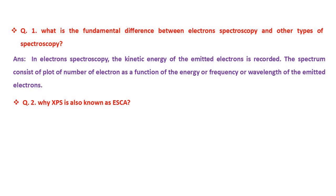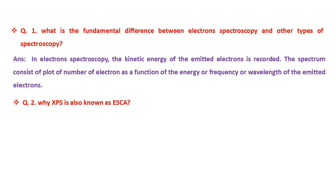Second question: why XPS is also known as ESCA? XPS is also known as ESCA because in contrast to UPS and Auger electron spectroscopy, both electron spectroscopies, XPS provides not only the information about atomic composition of a sample, but also the information about the structure and oxidation state of the compounds. Therefore, XPS is known as ESCA.